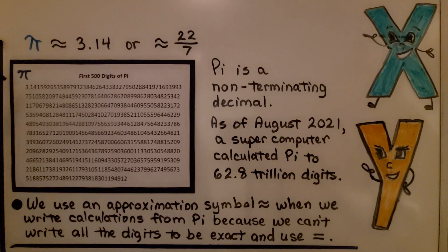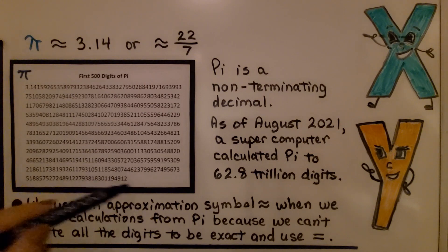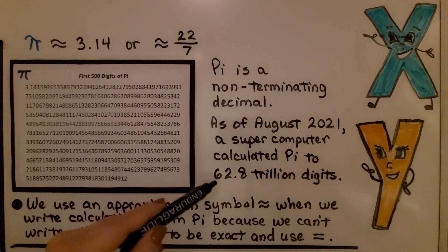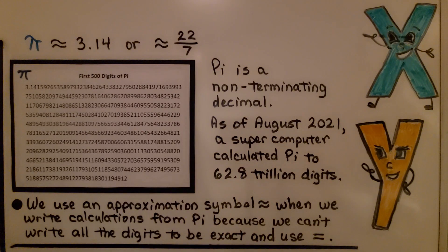Here are the first five hundred digits of pi: 3.14159265 — and it keeps going on and on. It's been calculated up to sixty-two point eight trillion digits. We use an approximation symbol — this double wavy line — when we write calculations involving pi, because we can't write all the digits to be exact and use an equal sign.